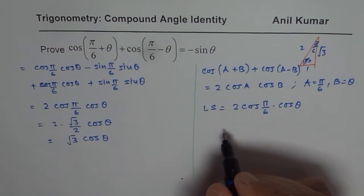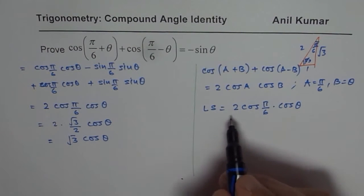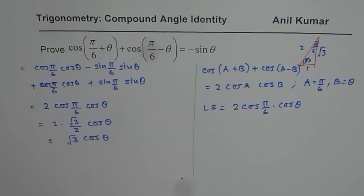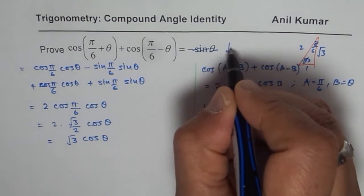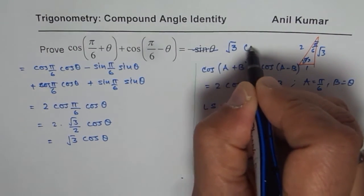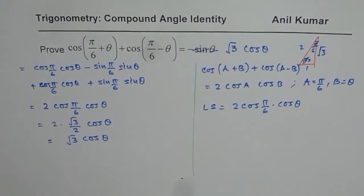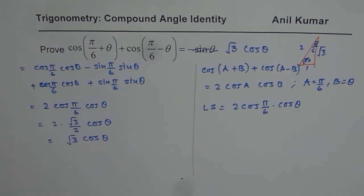The result is square root 3 cos theta. On the right side, using the same approach, you'll get the same answer. I think there is a typing error in the original problem. It should equal square root 3 cos theta, not minus sine theta.